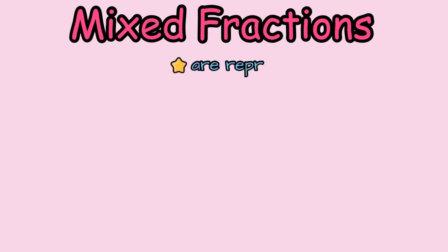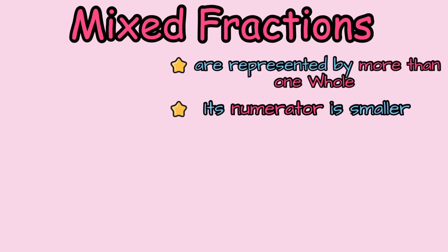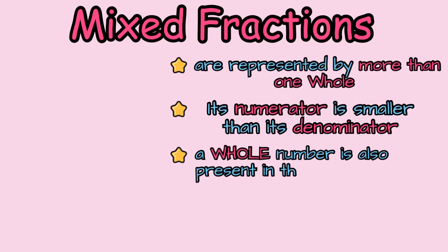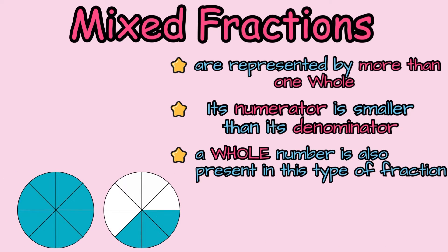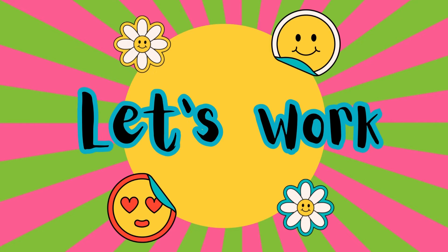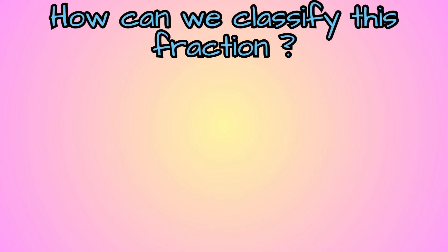Mixed fractions are represented by more than one whole. Its numerator is smaller than its denominator. And a whole number is also present in this type of fraction. Mixed fractions are basically represented by a whole number and a proper fraction. One of my wholes is all shaded in and the second one is 3 eighths. So that's why my fraction is 1 whole and 3 eighths.